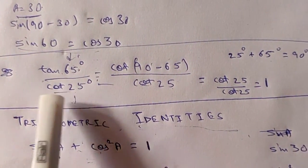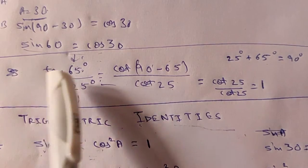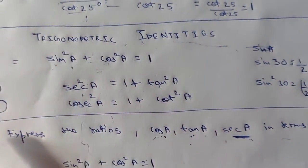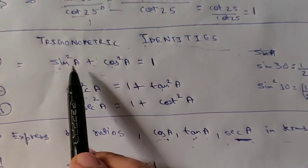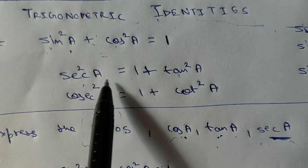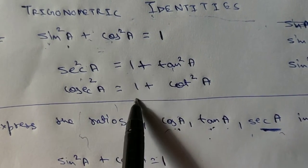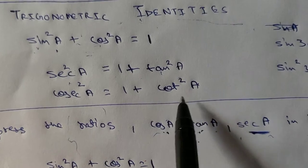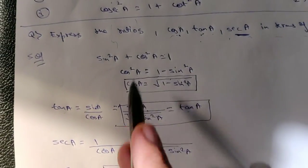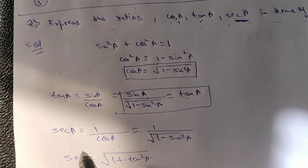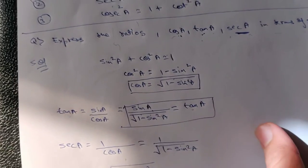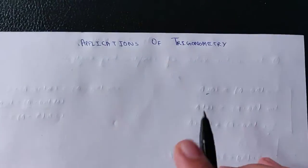You can pause the video and review those questions. We also learned these three trigonometric identities: sin²a + cos²a = 1, sec²a = 1 + tan²a, and cosec²a = 1 + cot²a. We also solved related questions — you can pause and read, or watch my previous video. Now we will move on to the next unit.